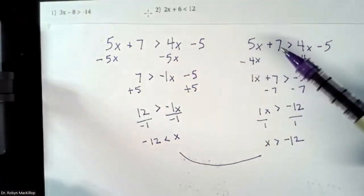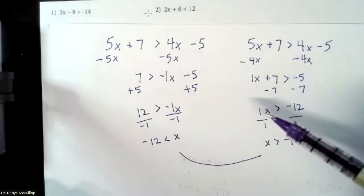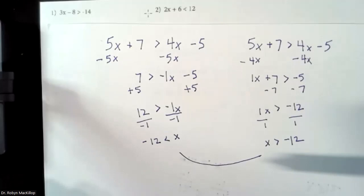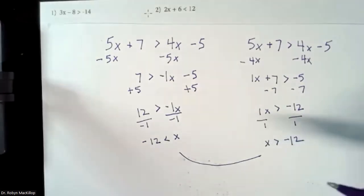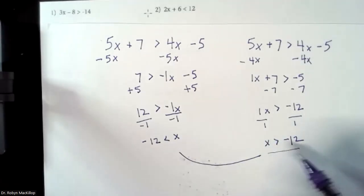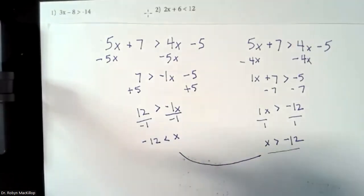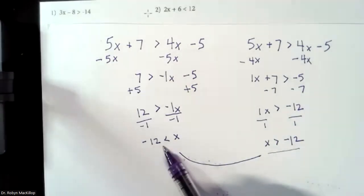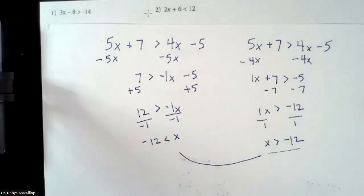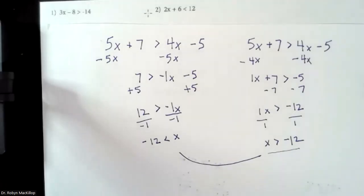So you could get rid of the 7 or the negative 5 — it'll look a little different in the middle, but you'll end up with the same answer. The computer on the GED will always give you the layout starting with x first. So even if you work it out and get 12 is less than x, you'll choose the answer written as x is greater than negative 12. At our testing center, they give you a little whiteboard and scratch paper, which is really nice to have something to write on.